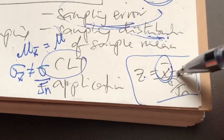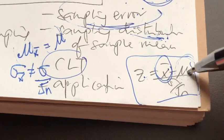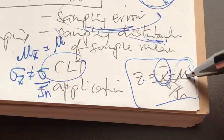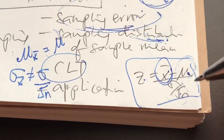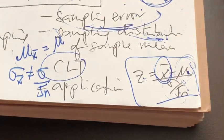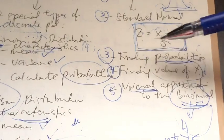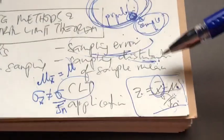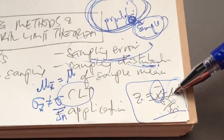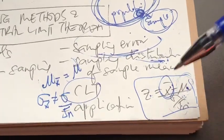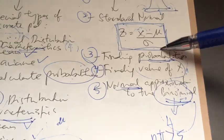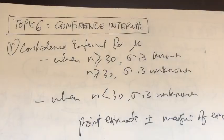The mu here is the mean of the sampling distribution of sample mean, divided by the standard error. Please know when to apply which standardizing formula: use the x-bar formula when dealing with averages, and use the x formula when dealing with individual values.